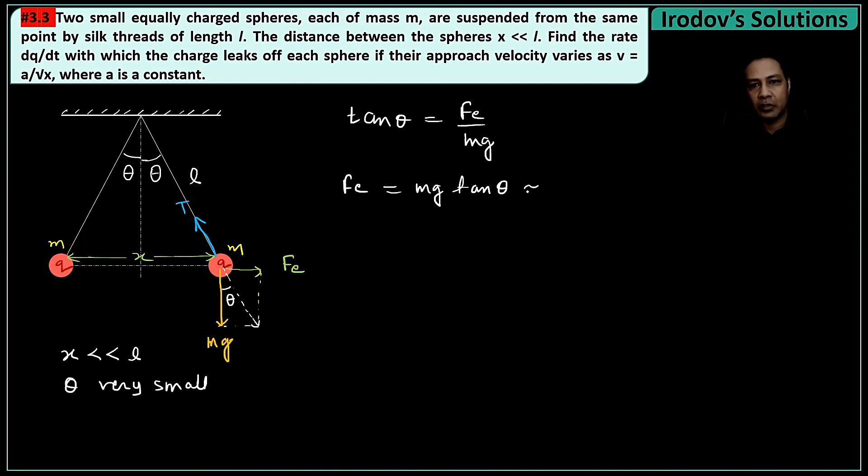So that will be mg sin θ. At this moment I can write the value of the electrostatic repulsion, and that would be 1/(4πε₀) times q²/x². From here, mg sin θ, where sin θ is x/(2l), so x/(2l).